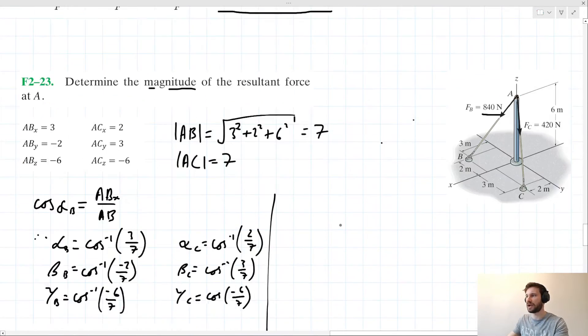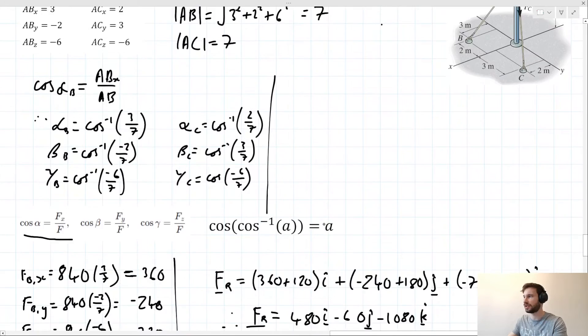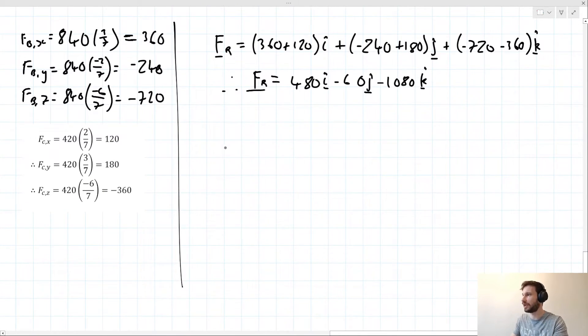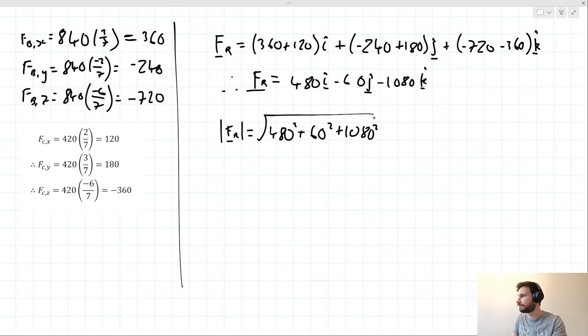The original question asked for the magnitude of the resultant force. Using the Pythagorean theorem, the magnitude of FR equals the square root of 480 squared plus 60 squared plus 1080 squared, which gives us approximately 1183.